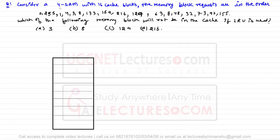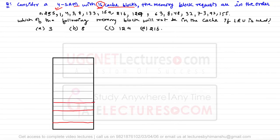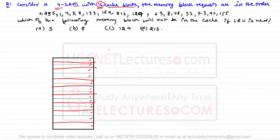Consider a 4-way set associative memory with 16 cache blocks. The memory block requests are given in a specific order. There are a total of 16 blocks, and the question asks which memory block will not be in the cache if LRU (least recently used) algorithm is used.